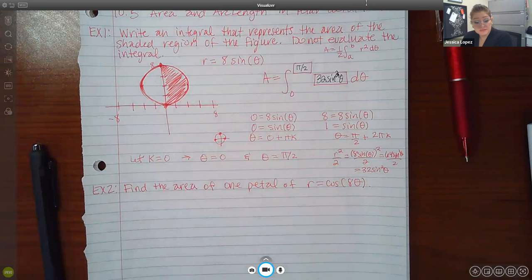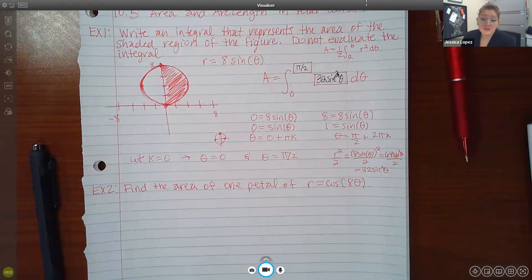In here, it should be r squared over two. So in my case, that would be eight sine of theta squared over two, which is 64 sine squared theta over two, which is actually 32 sine squared theta. They're not asking you to actually integrate it. They're just asking you what should go inside these boxes and that's it.